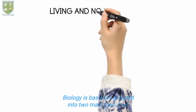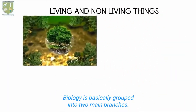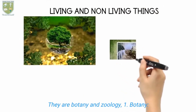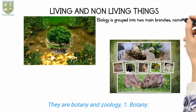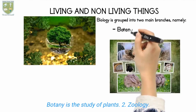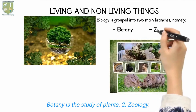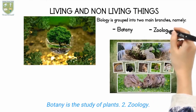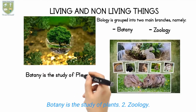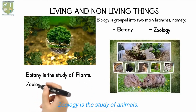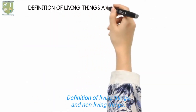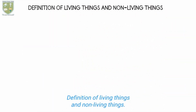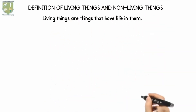Biology is basically grouped into two main branches. They are Botany and Zoology. 1. Botany — Botany is the study of plants. 2. Zoology — Zoology is the study of animals.